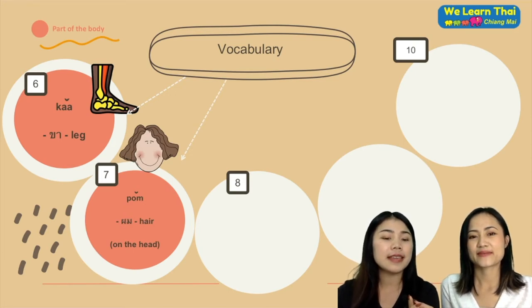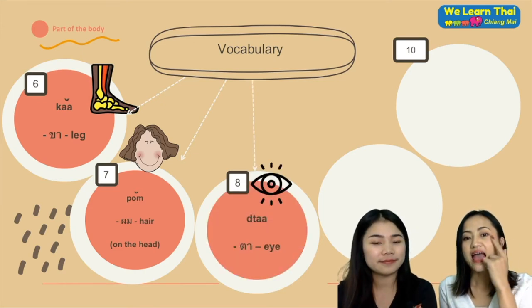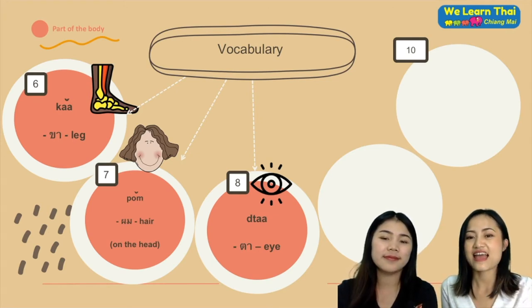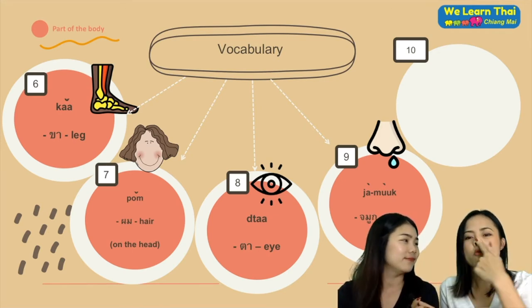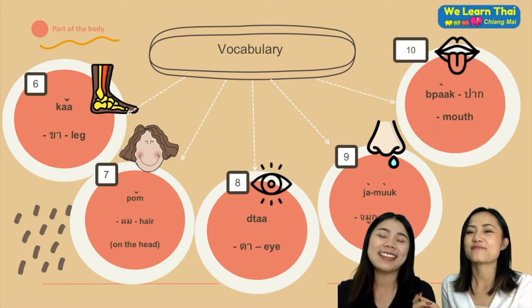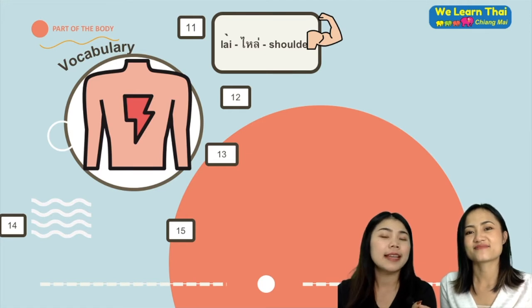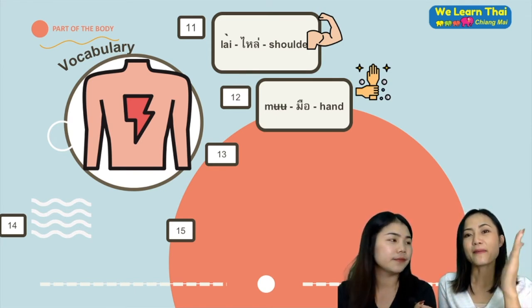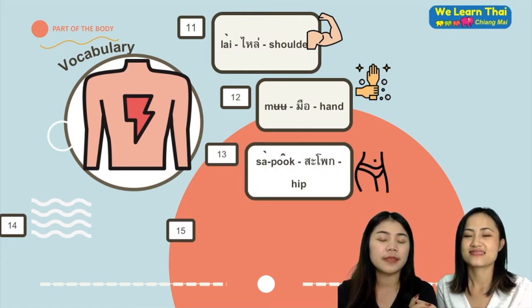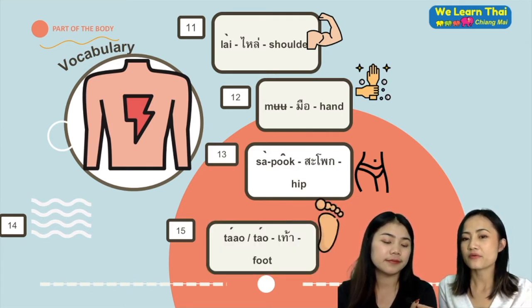Next is ขา, meaning leg. Then the word ผม, which means hair — same pronunciation and writing for men. Next is จมูก, meaning nose. Then ปาก, meaning mouth. And more: ไหล่ meaning shoulder, มือ meaning hand, and สะโพก meaning hip or support. Then เท้า meaning foot or feet.